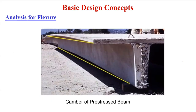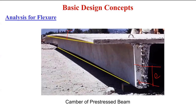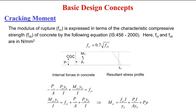In prestressed concrete, we must be careful: putting too much prestress is not always correct. Applying large compression at the bottom may cause local crushing, and very high eccentricity could create excessive camber, potentially causing tension at the top — cracking where we don't want it. We need to strike a careful balance.